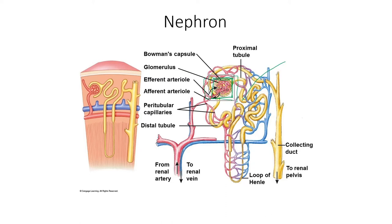Bowman's capsule surrounds and receives filtrate from the glomerulus and connects with the proximal tubule. The proximal tubule functions to reabsorb water, salt, glucose, and amino acids. Next is the loop of Henle, which functions to maintain concentration gradients. The last part is the distal tubule, or distal convoluted tubule, which is involved in tubular secretion of hydrogen ions, potassium, and other substances.